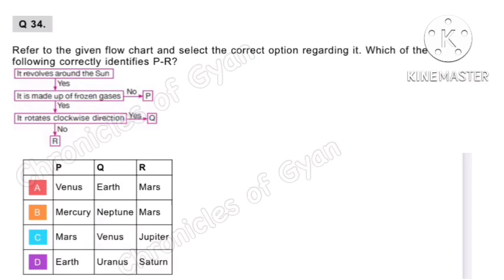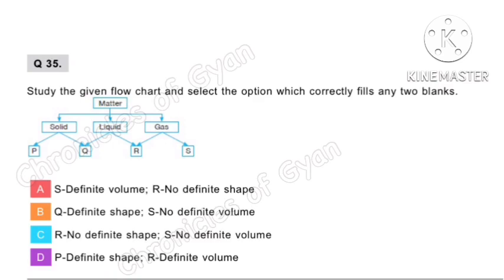Question 35. Study the given flowchart and select the option which correctly fills any two blanks. The correct answer is option C: R has no definite shape and S has no definite volume.